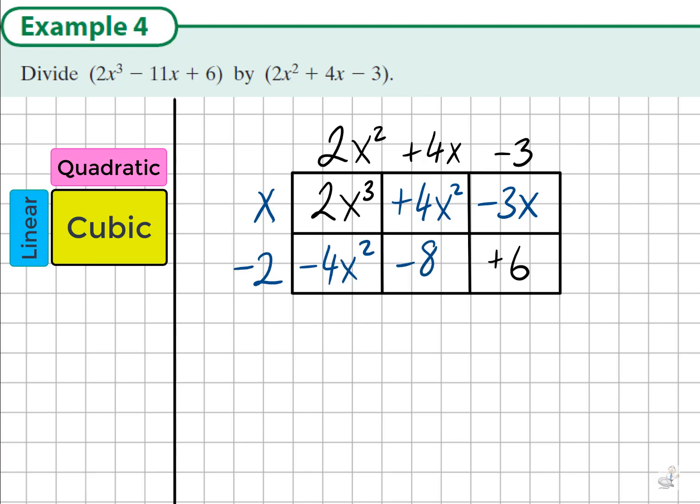Now to check if we're right, what we're looking for is the x squared term and the x terms the same as in the given cubic. So when we add the 4x squared and the negative 4x squared, we get 0x squared, which is correct. There is no x squared term in the given cubic.